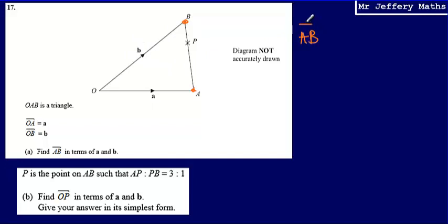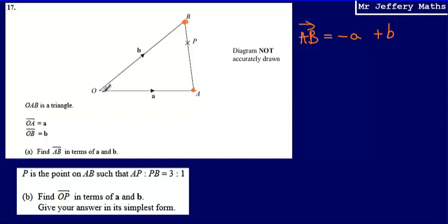So the vector A to B is going to be equal to: from A to O, I can describe that as negative a, and then from O to B, I can describe that as positive b, giving negative a plus b. The reason A to O is negative a is because it's going in the reverse direction of a — from O to A would be positive a, but travelling backwards along that line is negative a.